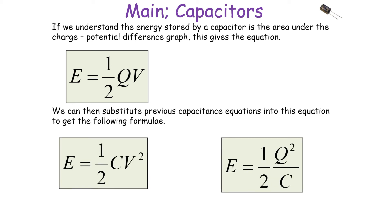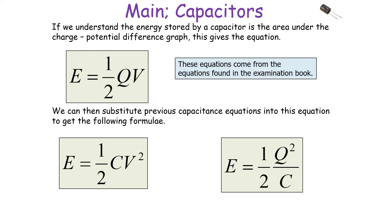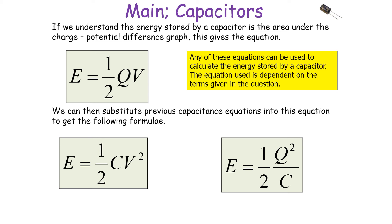The energy stored by a capacitor is the area under the charge–potential difference graph, giving E equals one half QV. This is because the area under the graph forms a triangular shape, where area equals one half base times height. Substituting previous capacitance equations gives two further formulae: E equals one half CV squared, and E equals one half Q squared over C. Any of these equations can be used depending on the terms given in the question: use Q and V for the first, C and V for the second, and Q and C for the third.